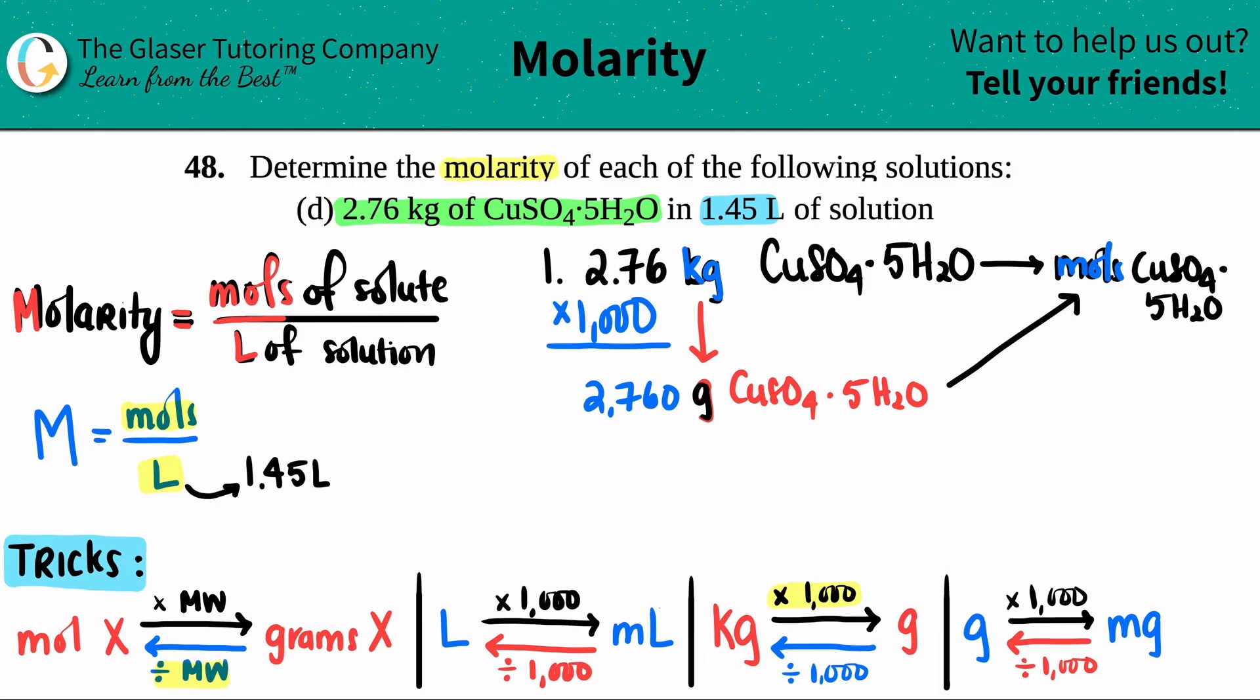So I need to take this number, the 2,760, and that's grams, and divide it by the molecular weight of the compound that was given. But they didn't tell us what the molecular weight of the compound that was given. The molecular weight of CuSO4-5H2O. But we've done tons of problems in which we've figured out a compound's molecular weight. We go to the periodic table and we just add up the weights for each individual element.